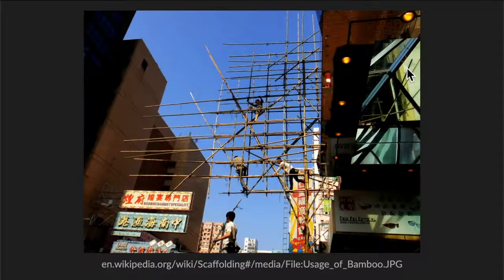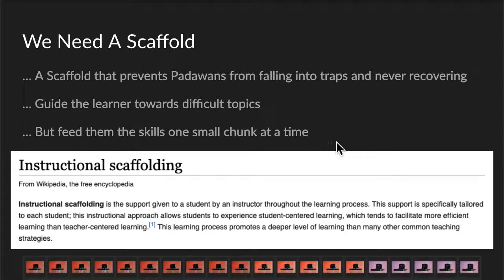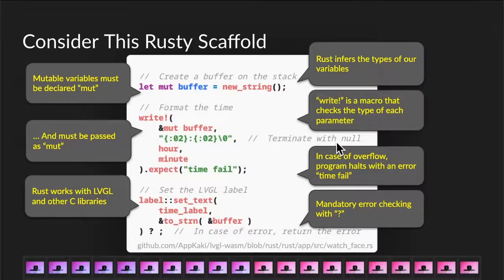What we need is something called a scaffold. We use it in construction — it's for building things. It's also an educational term. When we talk about an instructional scaffold, we talk about a scaffold that prevents learners from falling into traps and never getting out. A scaffold also guides the learner towards more difficult topics, but we feed them one small chunk at a time, not one big bunch. So what can we do to prevent learners from falling into this trap? Let's consider this Rust version of a scaffold.